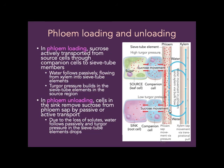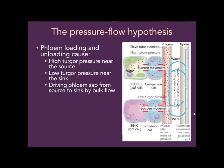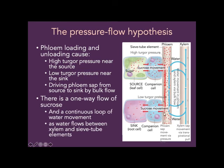Phloem unloading is the process by which cells in the sink remove the sucrose from the phloem sap. As solutes are lost, water flows passively out and the turgor pressure in the sieve tube element drops. This results in high turgor pressure near the source and low turgor pressure near the sink, driving water to flow from source to sink. This makes a one-way flow of sucrose, but the water moves in a continuous loop — from source area through the phloem to the sink, then back into the xylem, and it never leaves the plant.